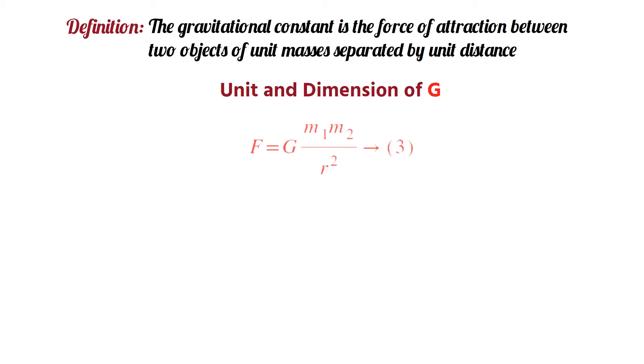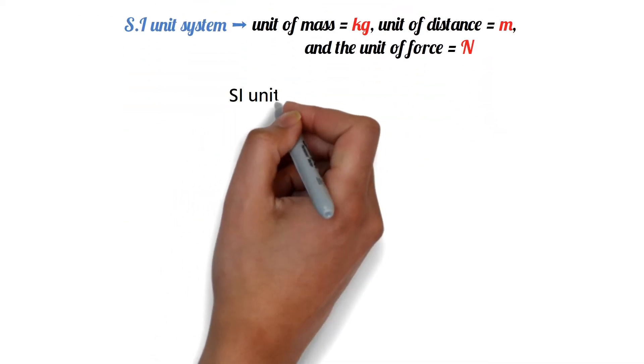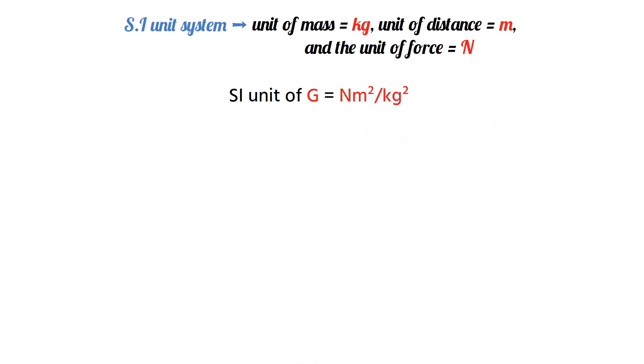From equation number 3, we can write the unit of G equals the unit of F into unit of R square divided by unit of M square. We know in the SI unit system, the unit of mass is kilogram, the unit of distance is meter, and the unit of force is newton. So the SI unit of G is newton meter square per kilogram square.